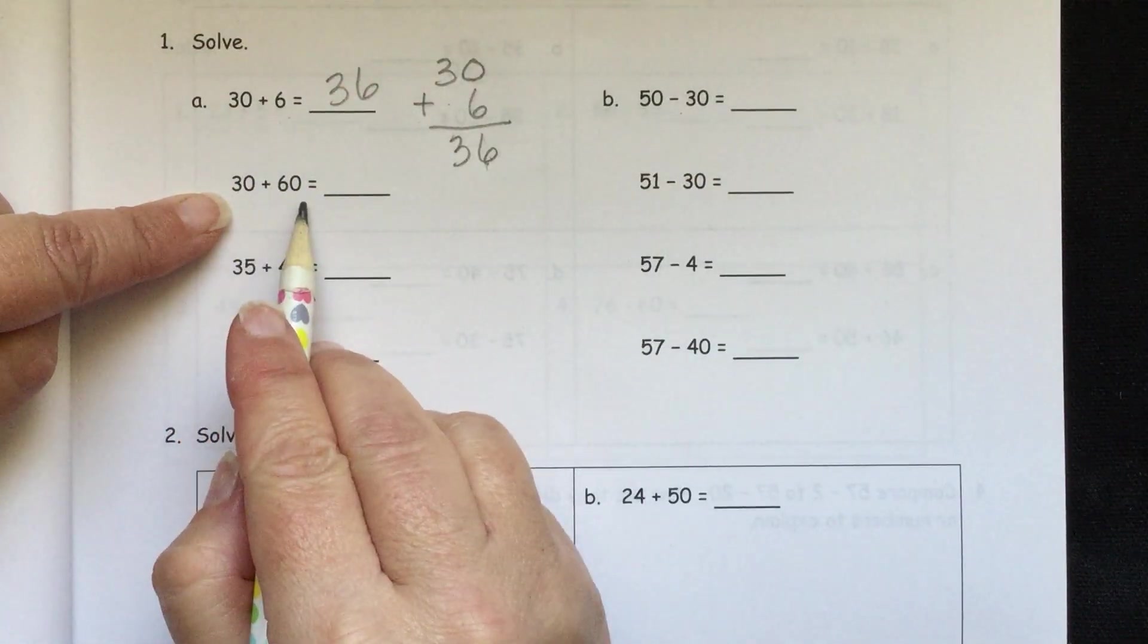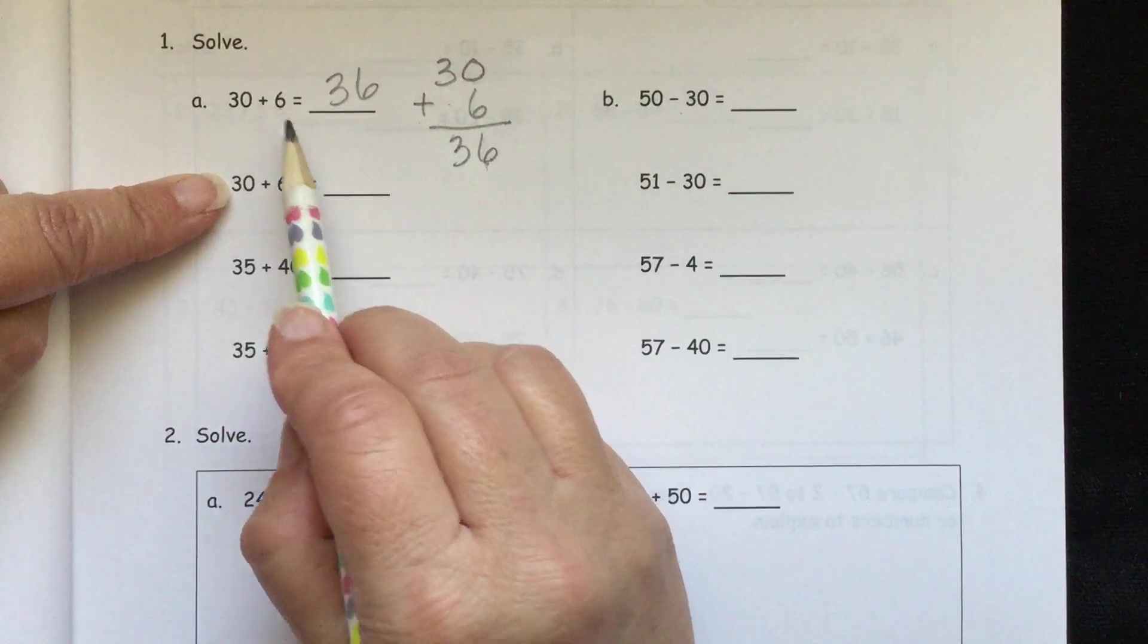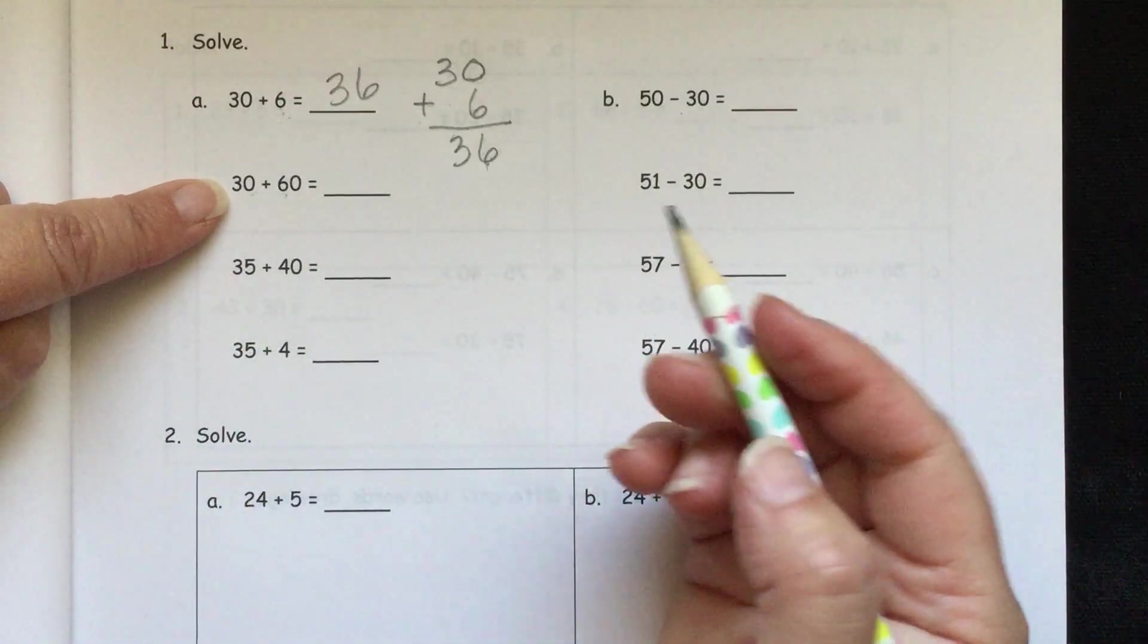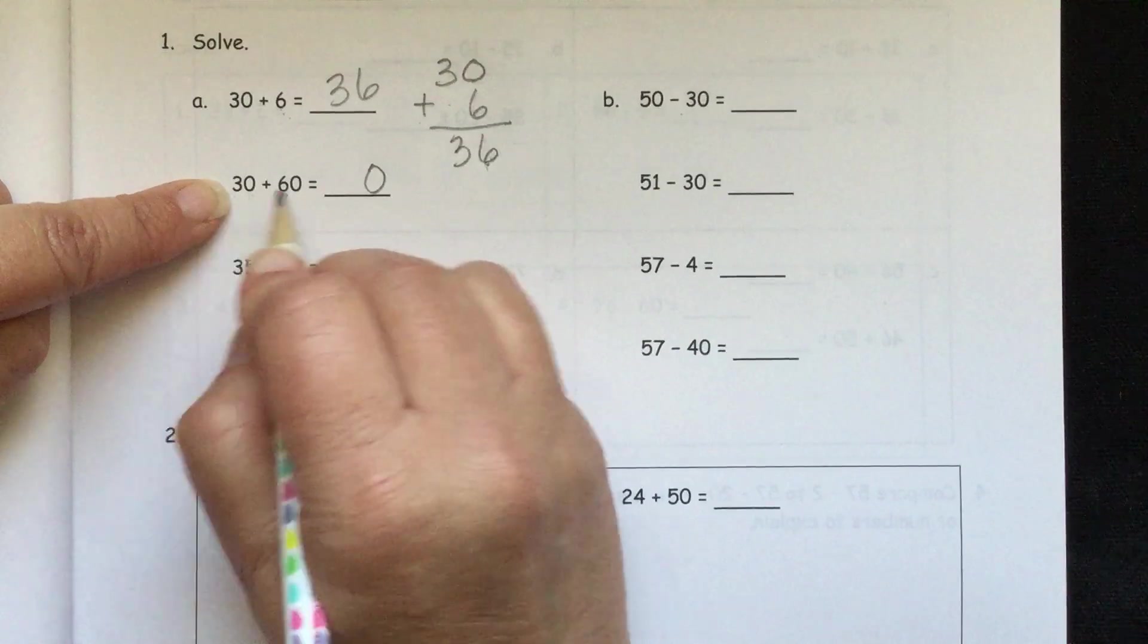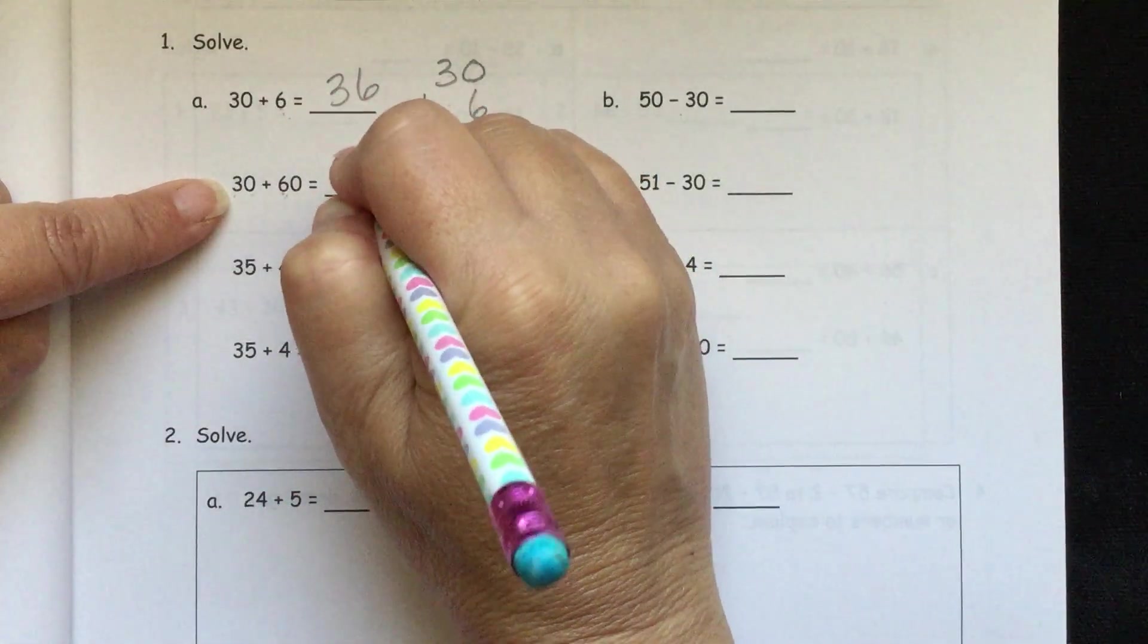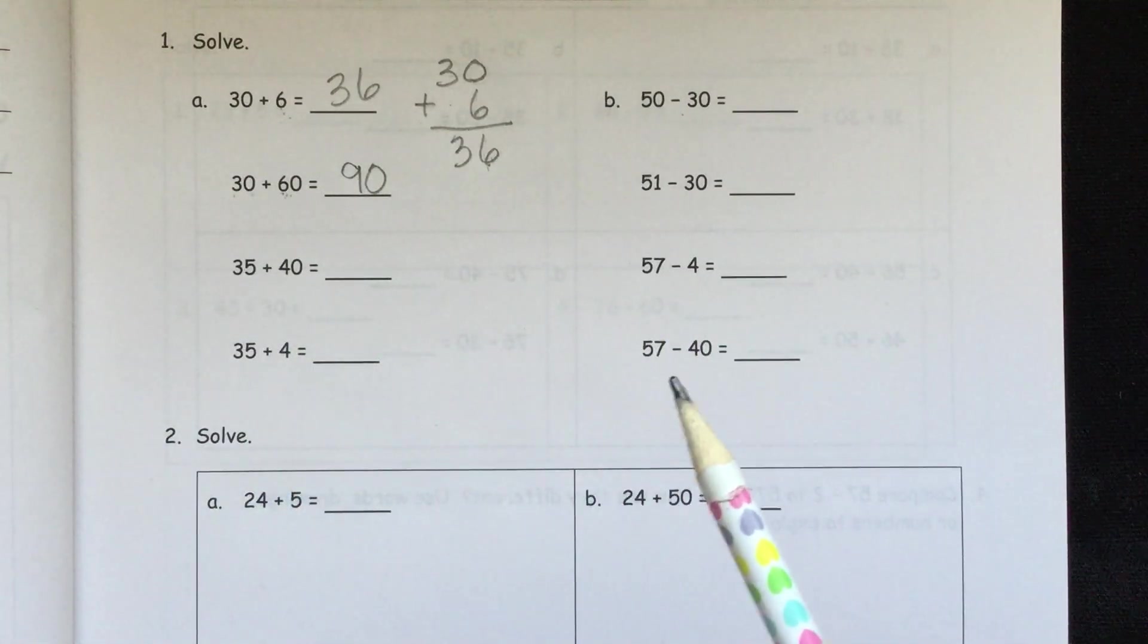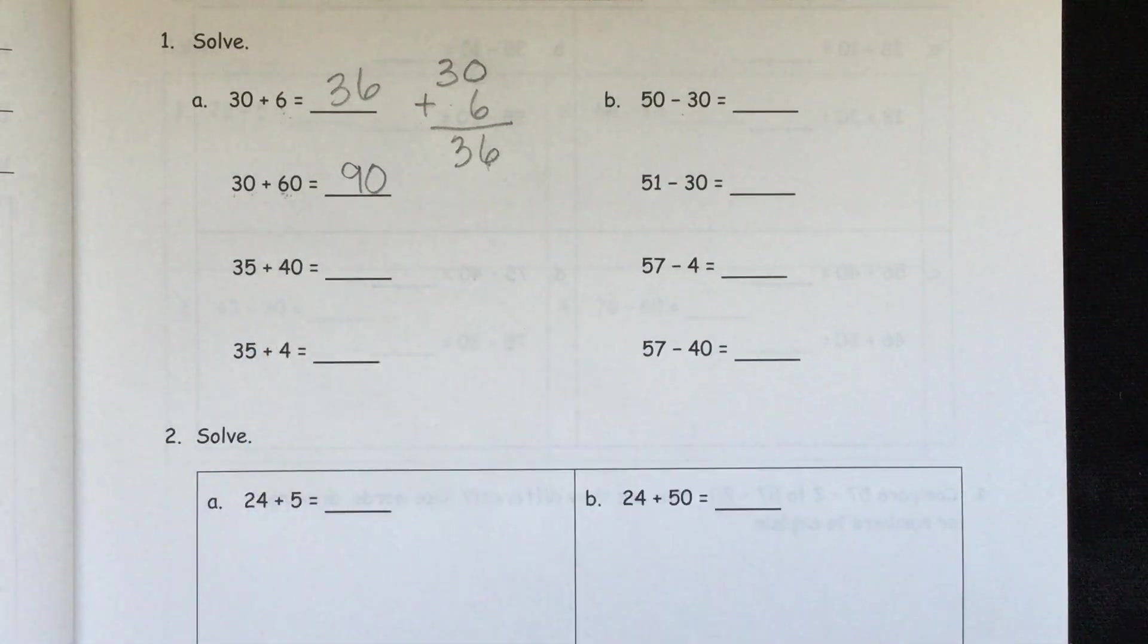Now, you can see they slightly changed the problem on the next one. Instead of having 6 in the ones like they did here, they have 6 in the tens space here. So we have our zeros and our ones. We know 0 plus 0 is just a 0. And then we can add up our 6 and our 3 because those are in our tens. You could think about it, I like starting with a bigger number. So I would start with 60 and then I can count by tens. So 60, 70, 80, 90. I add my 3 tens. So there are different ways to do that.